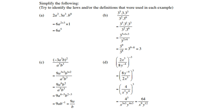Part c: (negative 3 a cubed b) all squared. Squaring everything: negative 3 squared becomes positive 9; a to the power 3 times 2 is a to the power 6; b to the power 1 times 2 is b squared. This gives 9a to the power 6 b squared over a to the power 5 b to the power 3. Then subtracting exponents — a to the power 5 from a to the power 6, and b squared from b cubed — gives the final answer 9a over b.